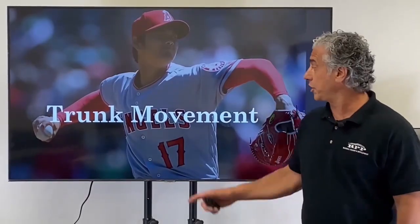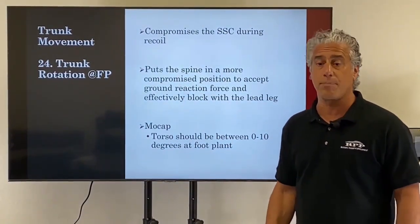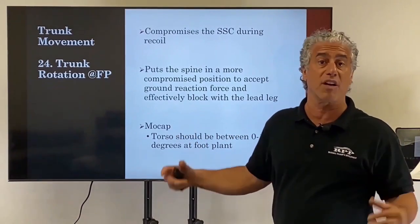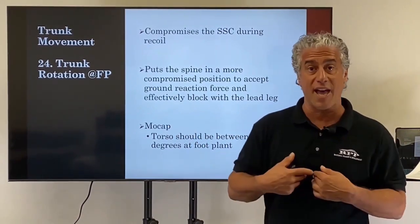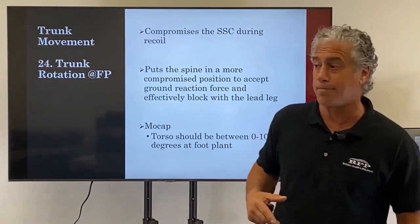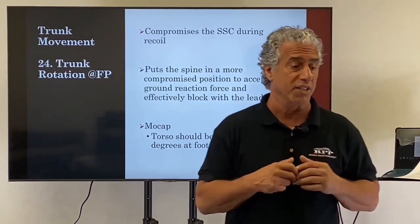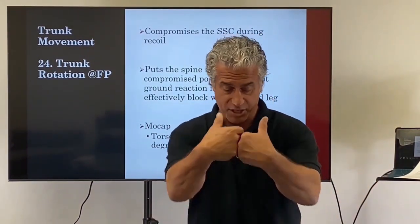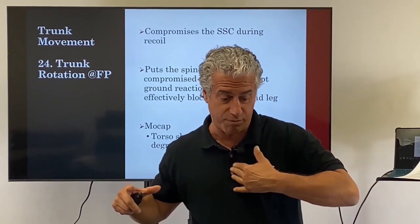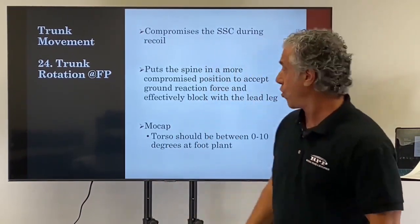Let's take a look at trunk movement. Number 24: trunk rotation at footplant. This is looking at whether guys are opening up their front side early, causing early rotation of the upper body. On our mocap we look at anywhere from zero to minus ten degrees — zero is pointing straight ahead at the plate — to create that nice torque on the spine.